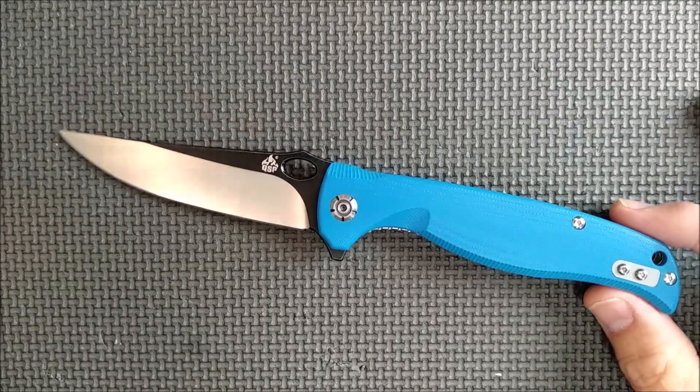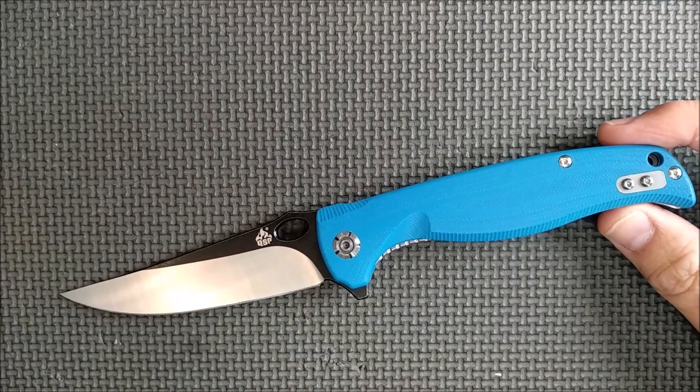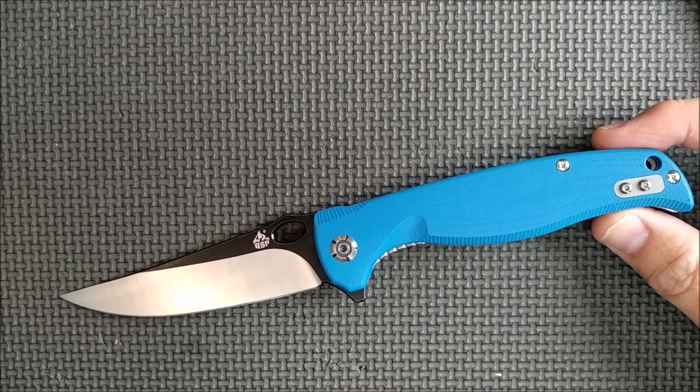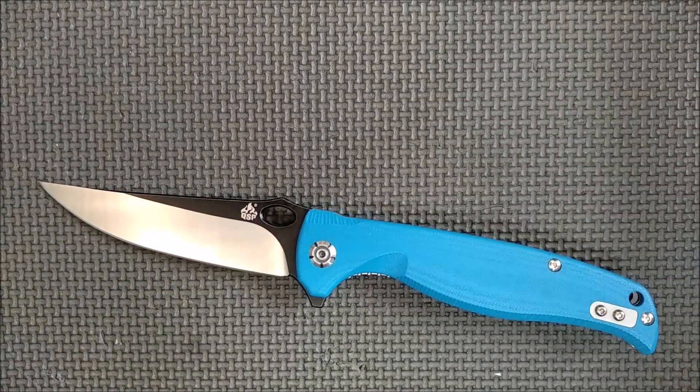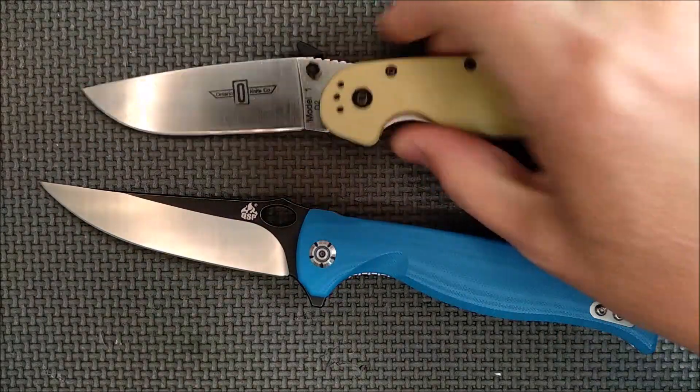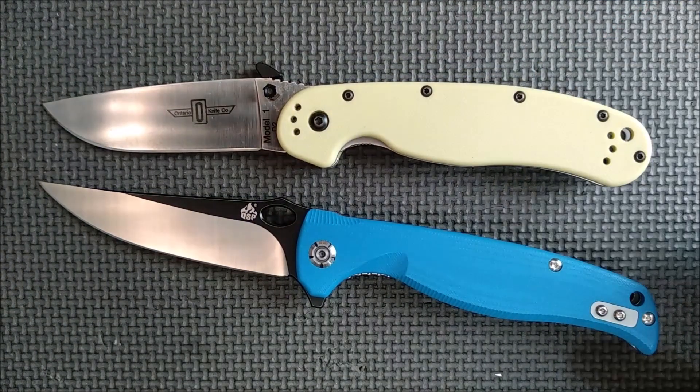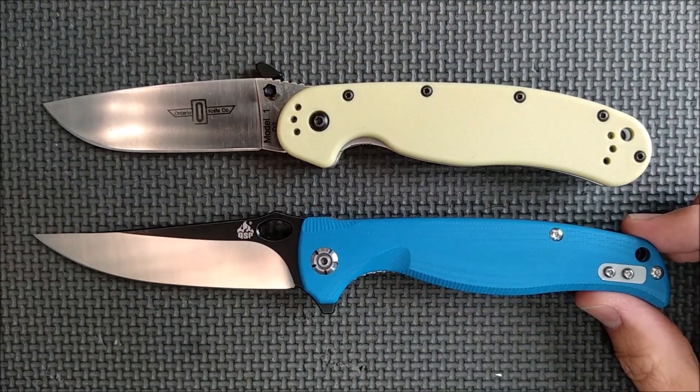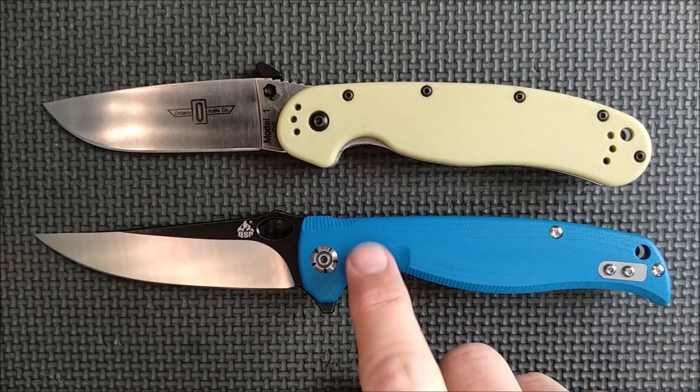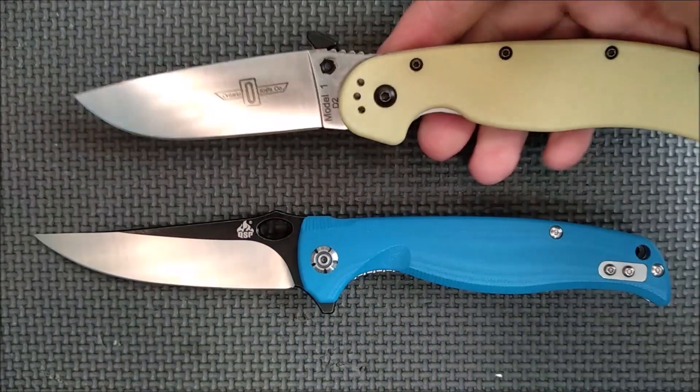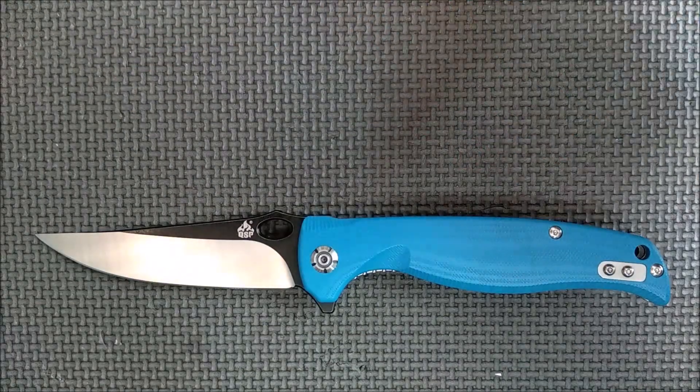So there you go, there's the gavial. Let's do a size comparison with the Ontario Rat 1. There it is. Let's line up the pivot pins. Bigger in the handle, bigger in the blade. This is not a small knife. The Ontario Rat 1 is the larger of the Ontario Rats.